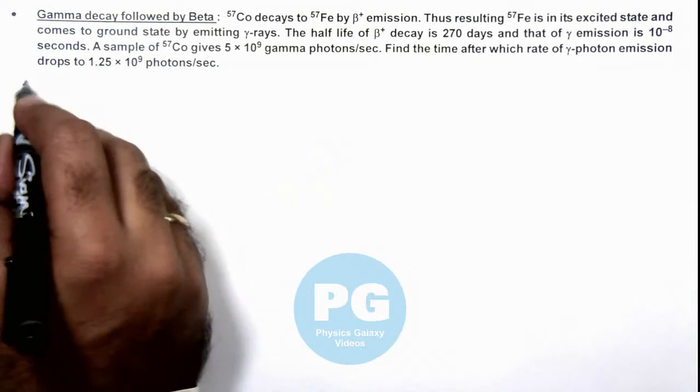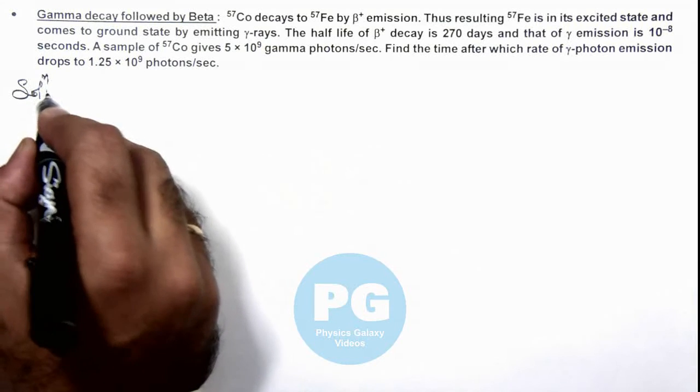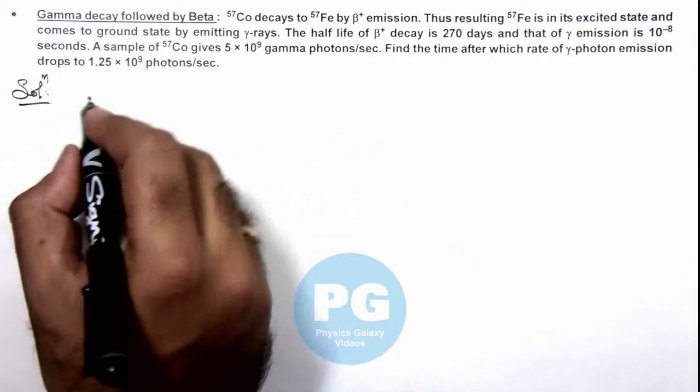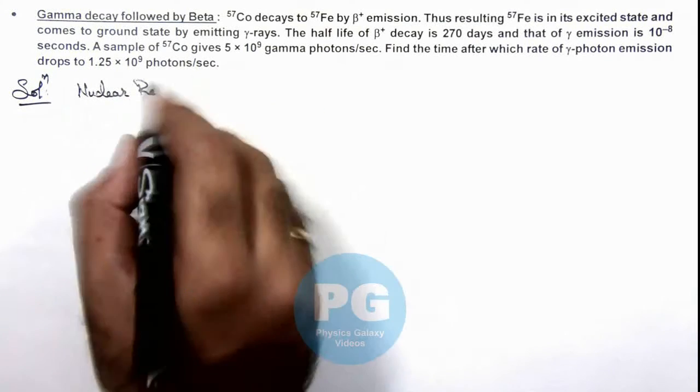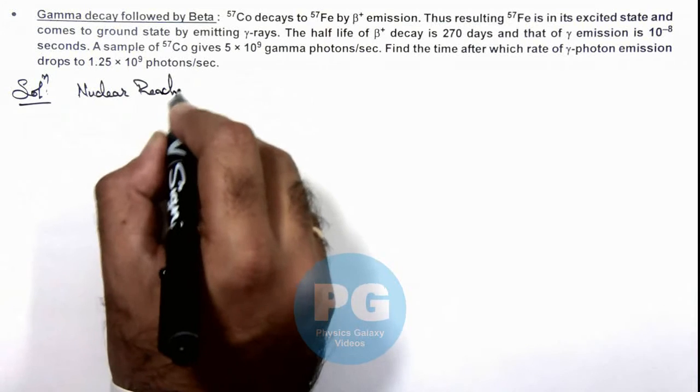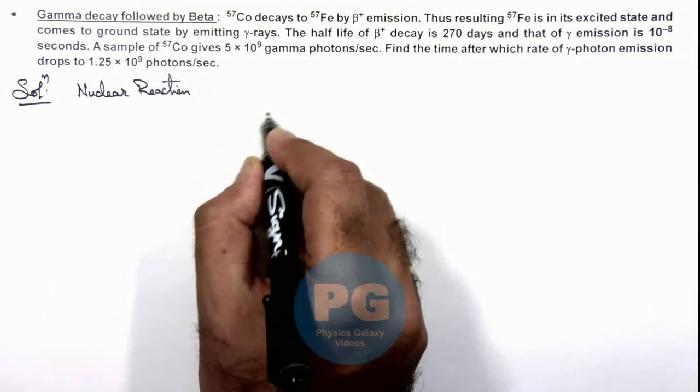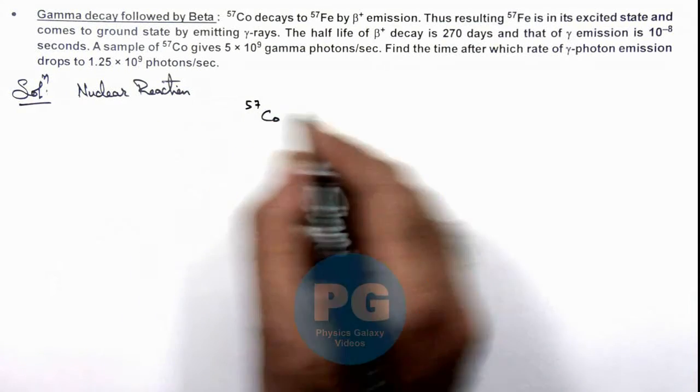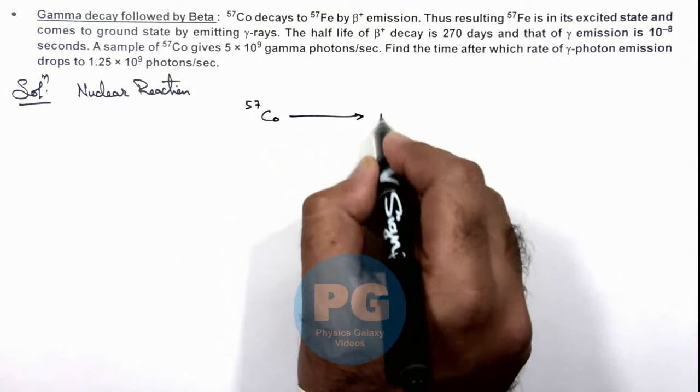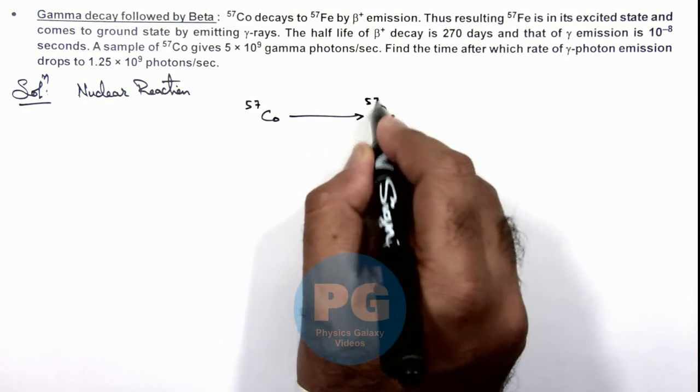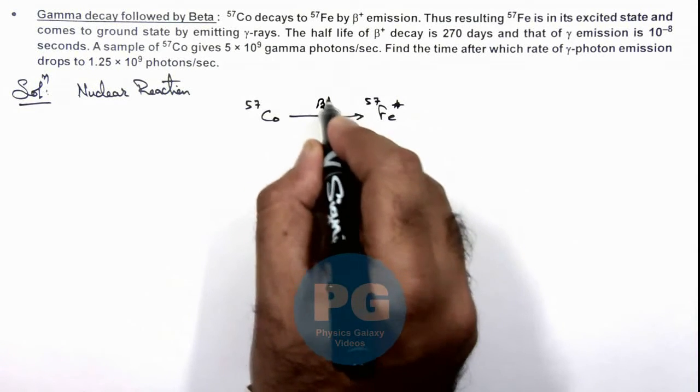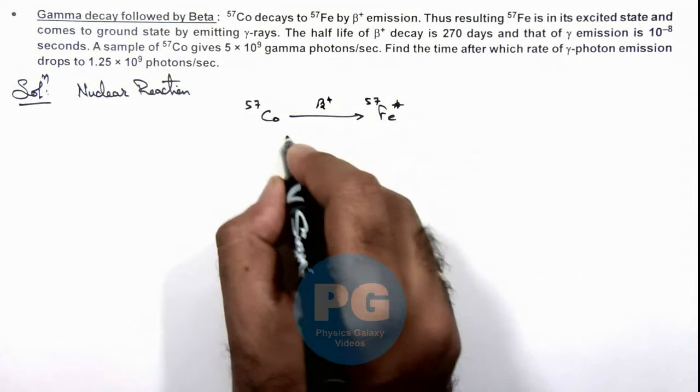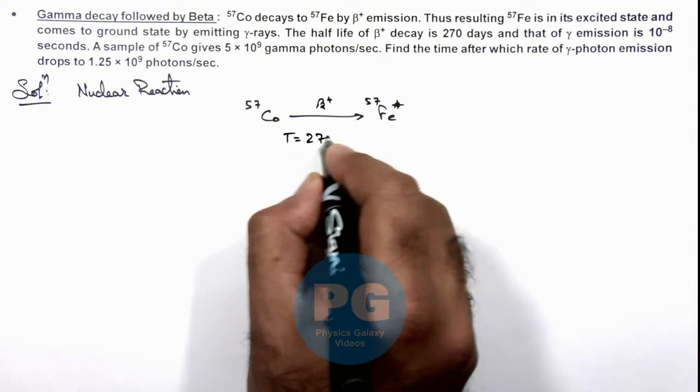Here first we need to understand how the reaction is taking place. If we write down the nuclear reaction for this radioactive emission, here we can see Cobalt-57 first decays to Iron-57, which is in its excited state. This is the beta plus emission and the half-life here is given as 270 days.